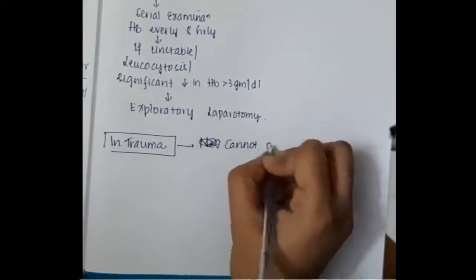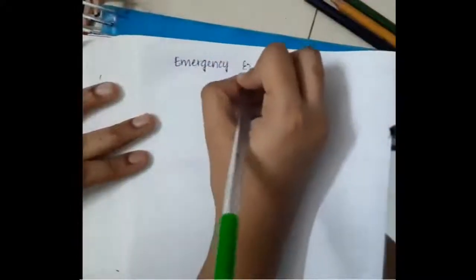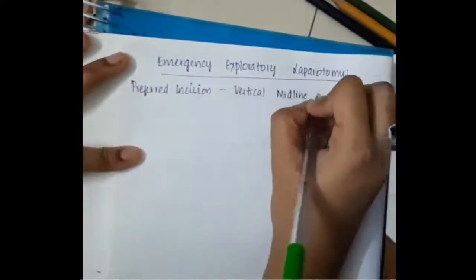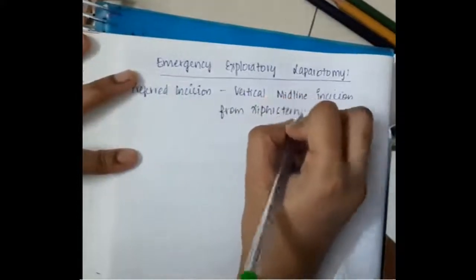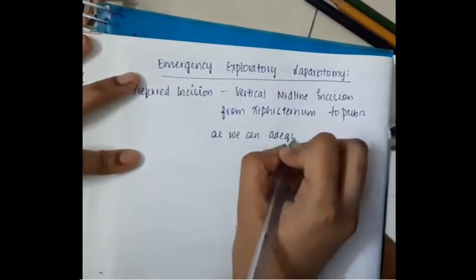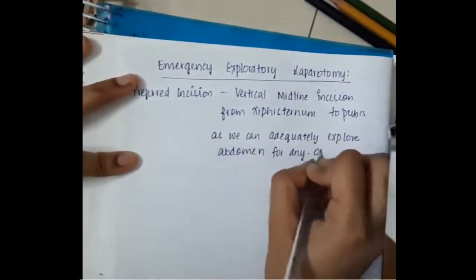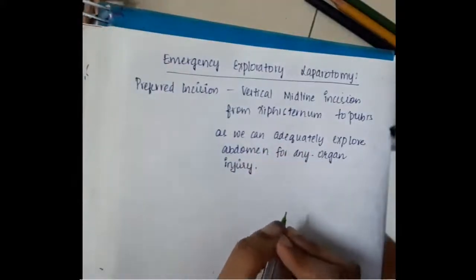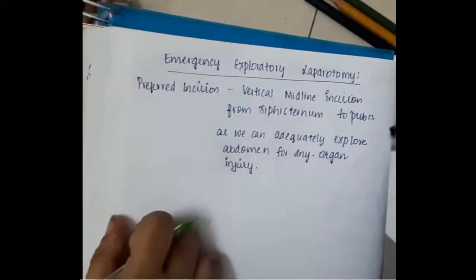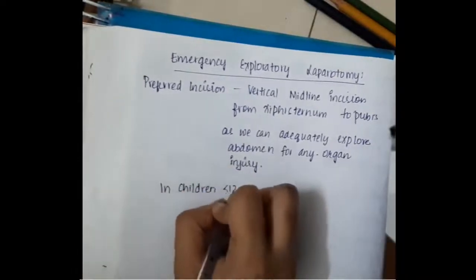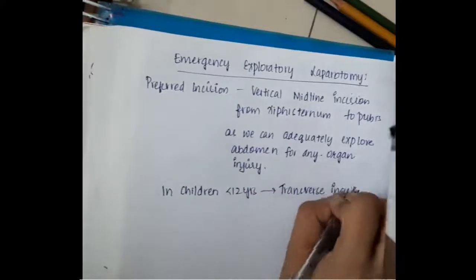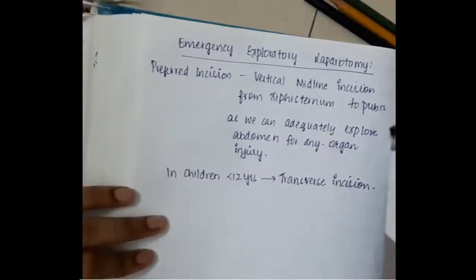In trauma, laparoscopy cannot be performed; exploratory laparotomy should always be done when in doubt. Emergency exploratory laparotomy is performed with a vertical midline incision extending from the xiphisternum to the pubic bone in adults, as this allows adequate exploration of the abdomen for any organ injury. In children less than 12 years of age, a transverse incision is given instead.